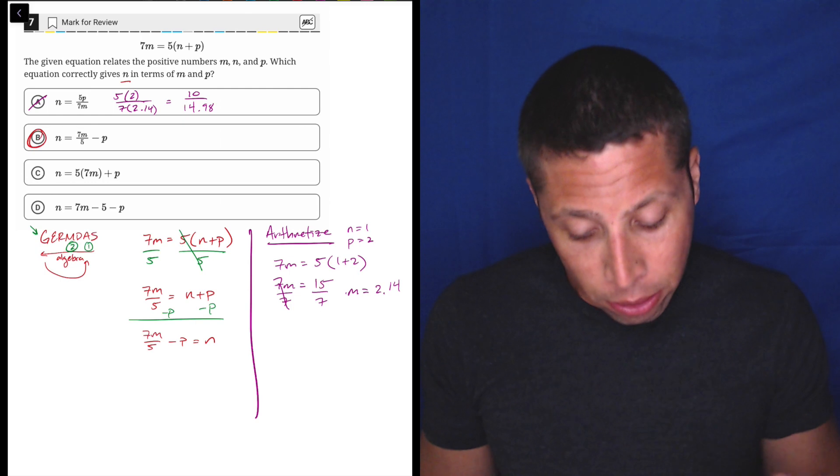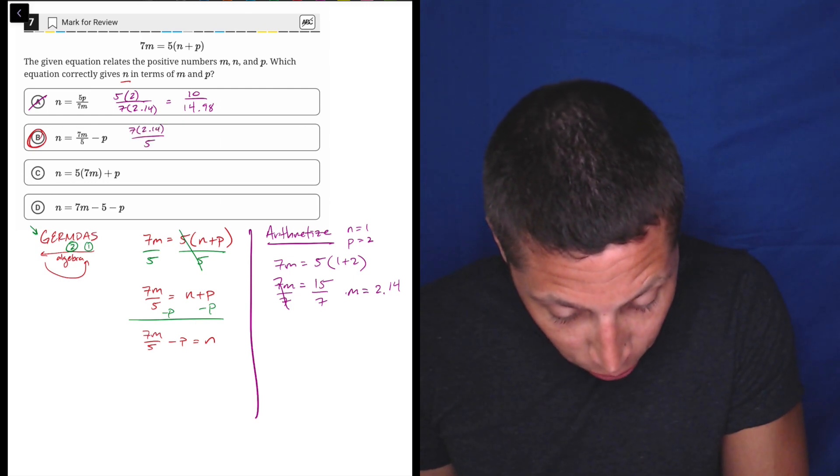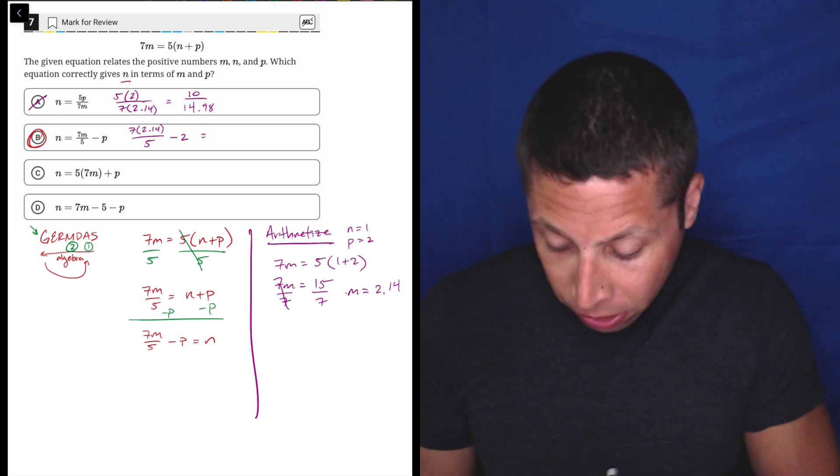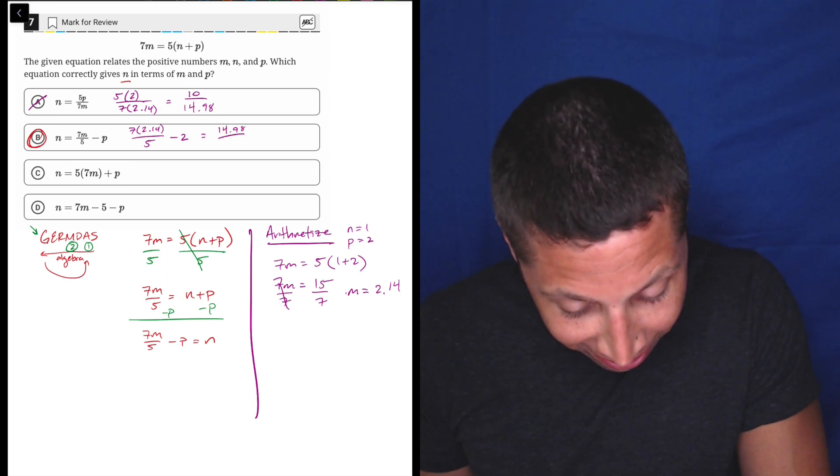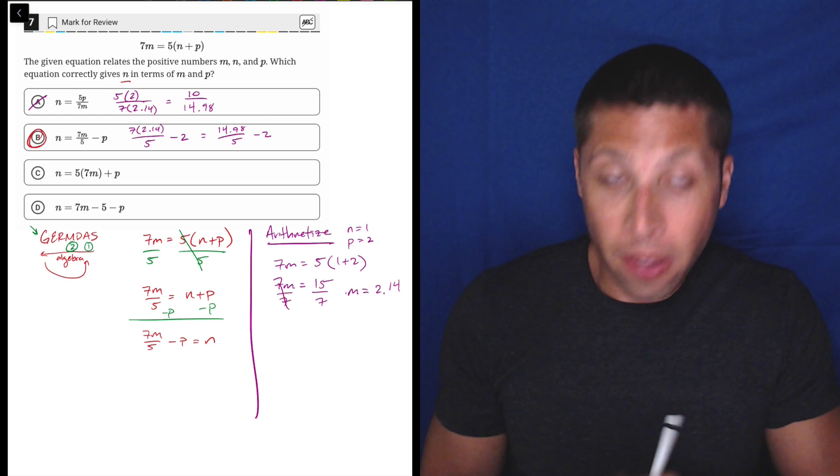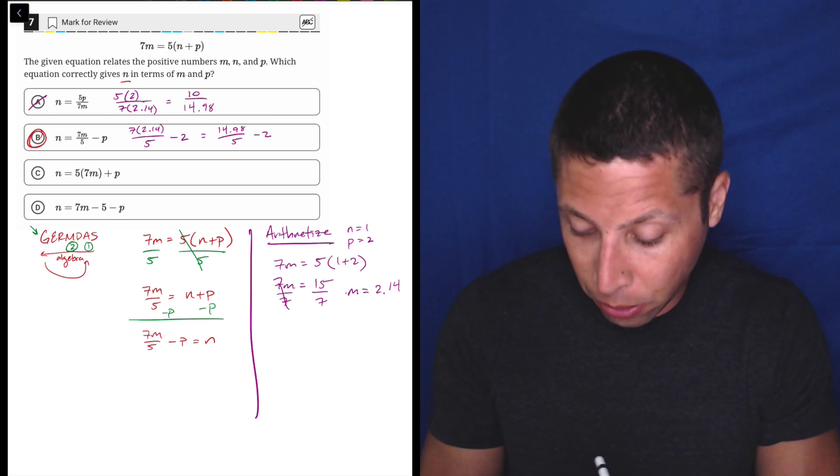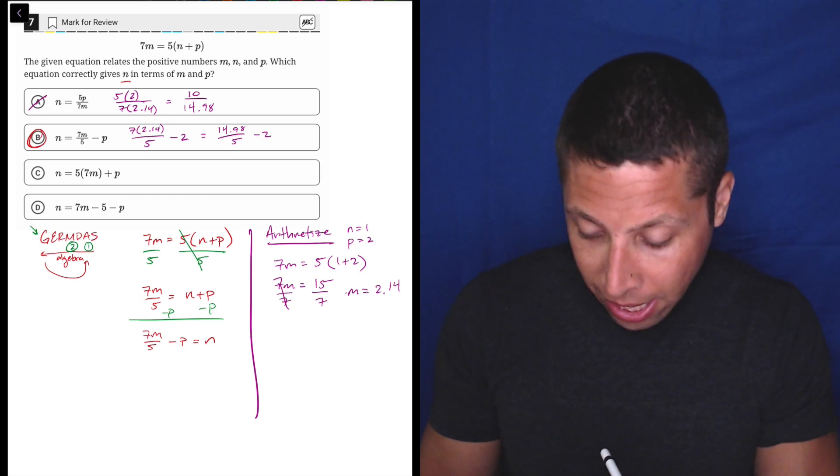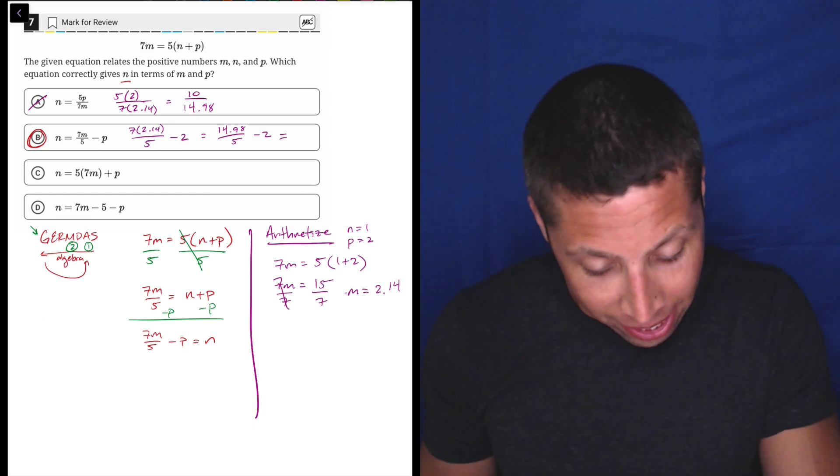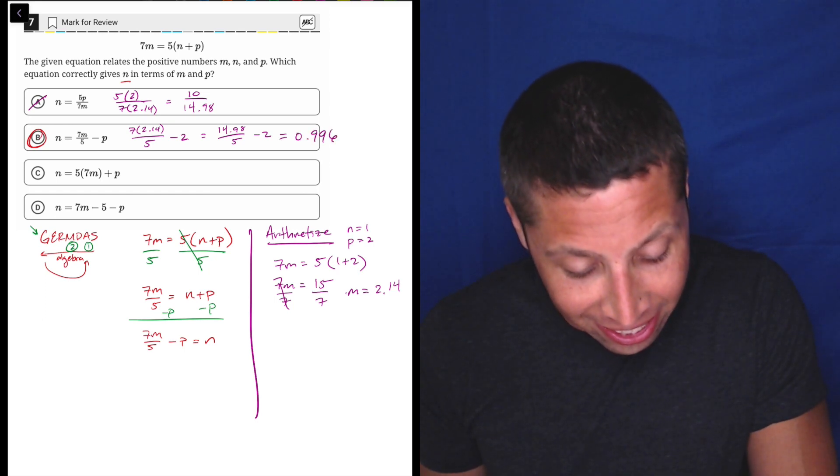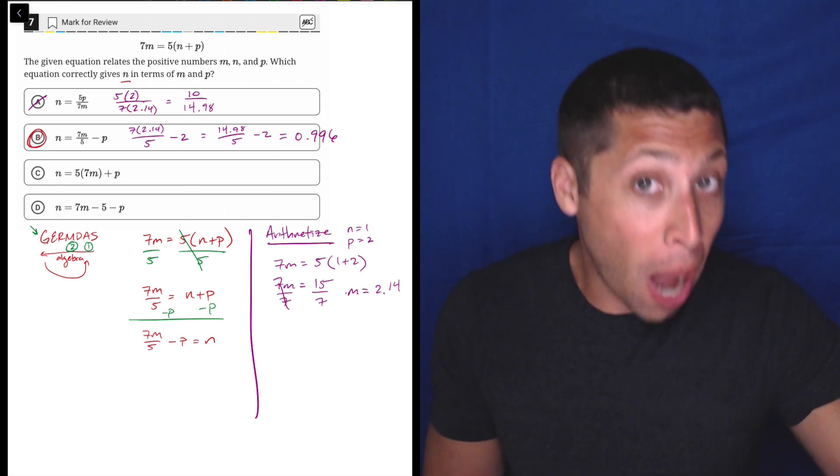So that's wrong. Now compare that to choice B. That's 7 times the 2.14 over 5 minus p is 2. So 7 times 2.14, I just did that, is 14.98. I don't know why I'm doing it again. Divided by 5 minus 2. So now you might see, okay, well, 14.98 is really supposed to be 15 if I didn't round, but even without it, 14.98 divided by 5 is 2.996 minus 2 is 0.996, basically close to 1, really close, right? So that would probably be the answer.